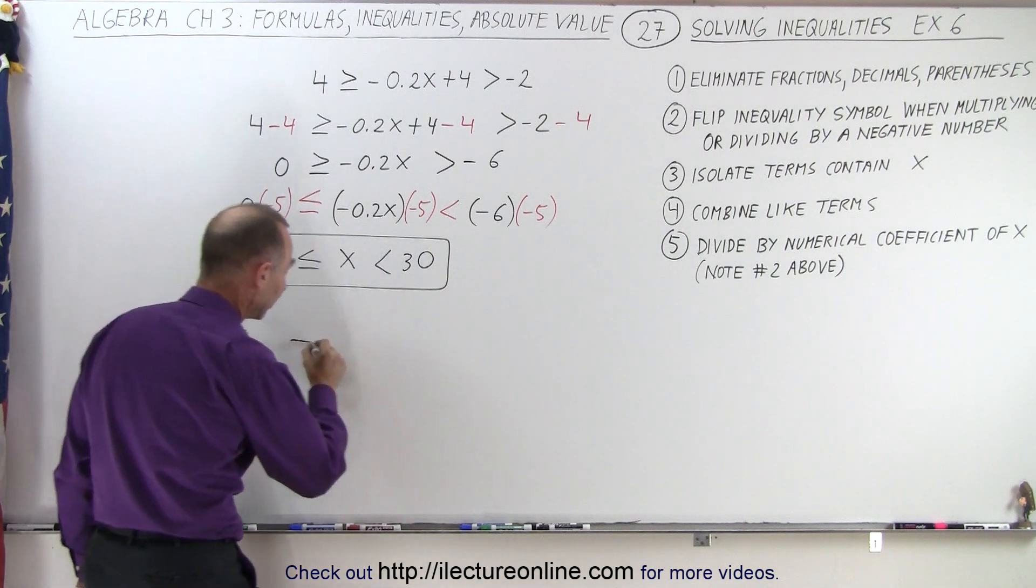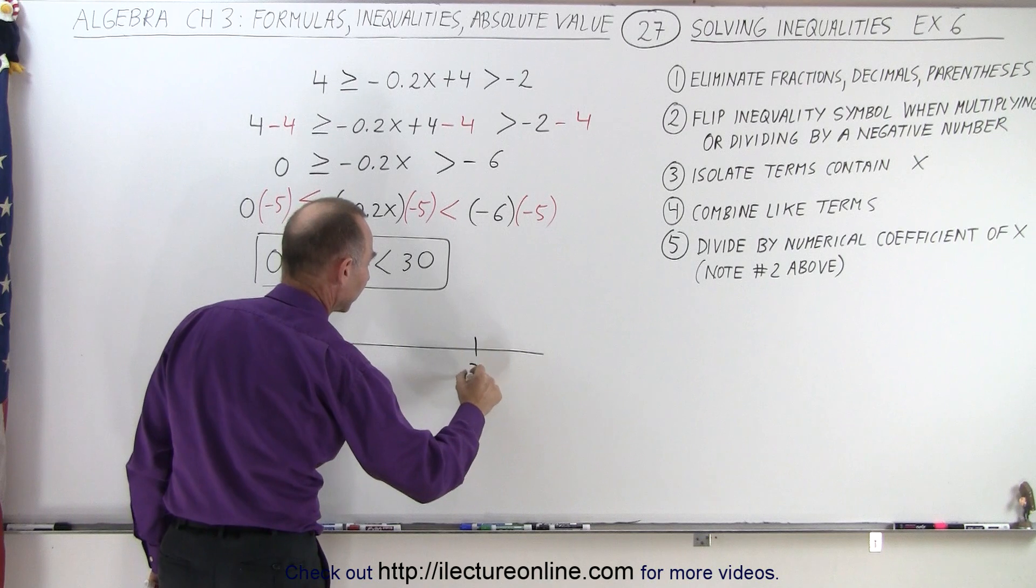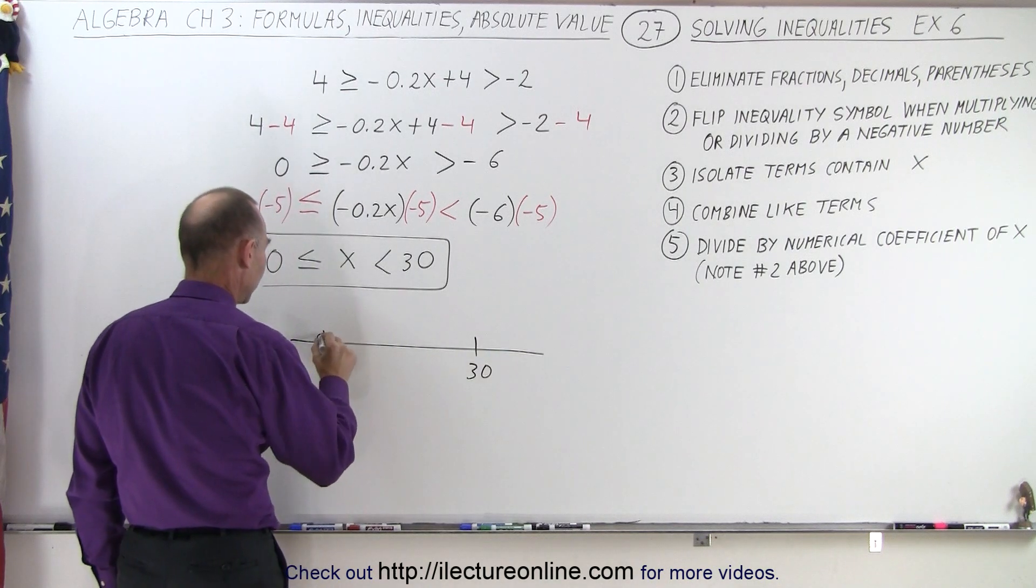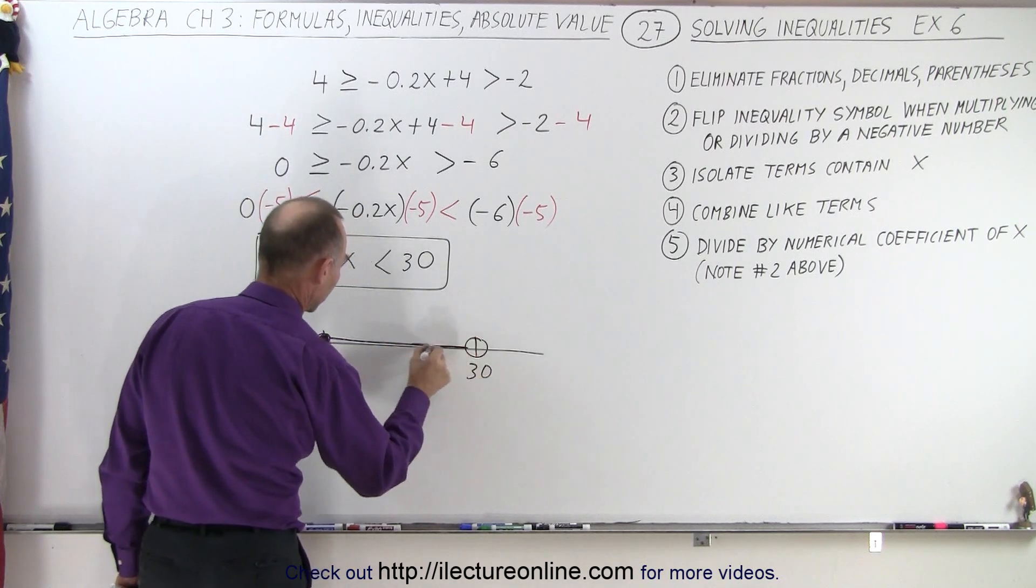Graphically, we could write it like this. We have 0 on this side, 30 on this side. 0 is included, so I have a solid circle. Here I have a hollow circle, and all the points in between as a solution to that inequality.